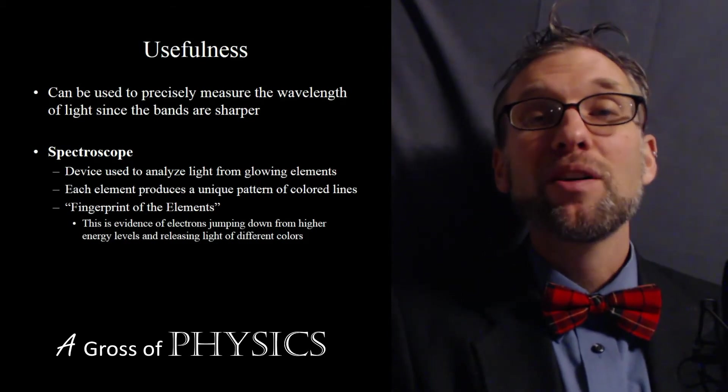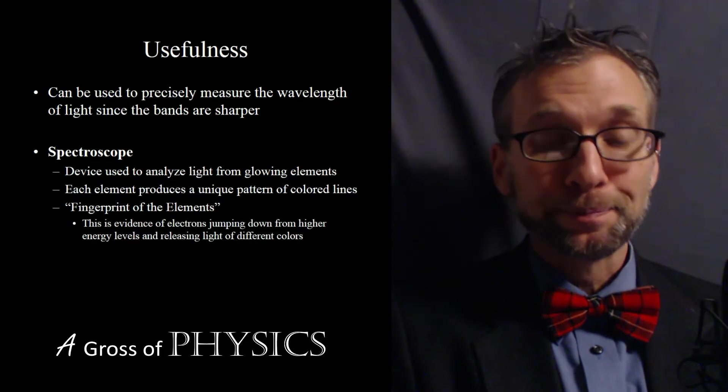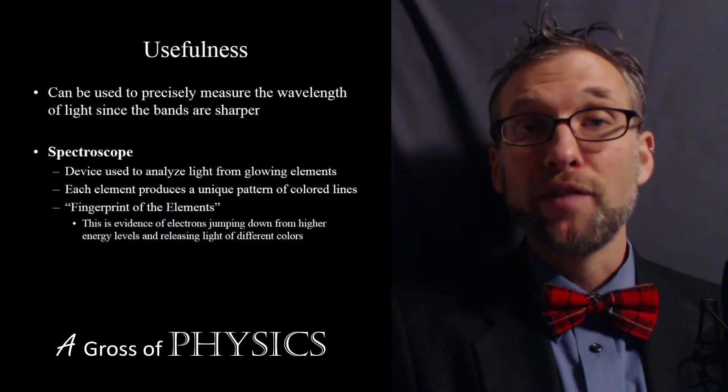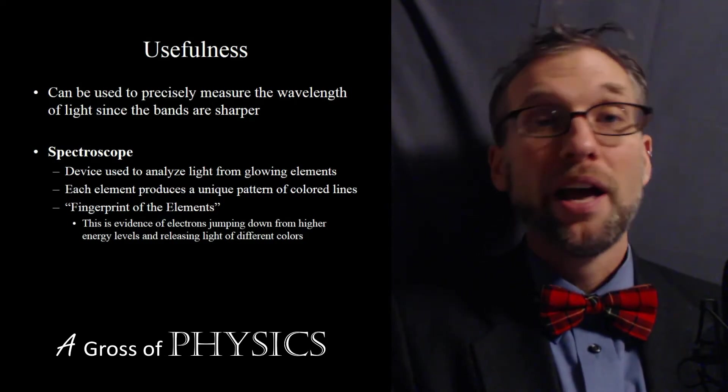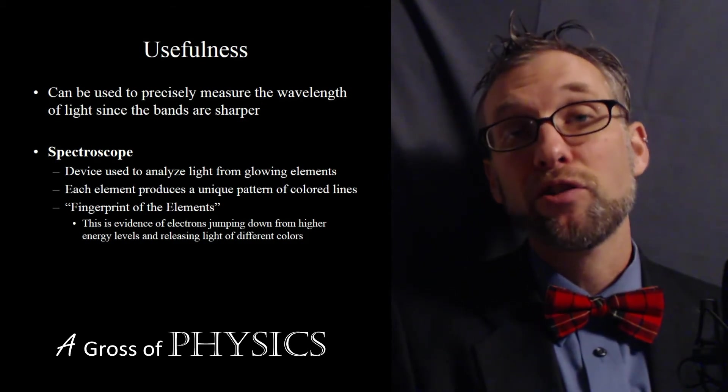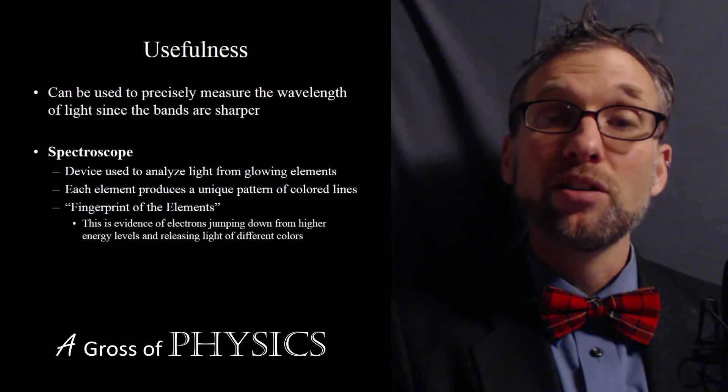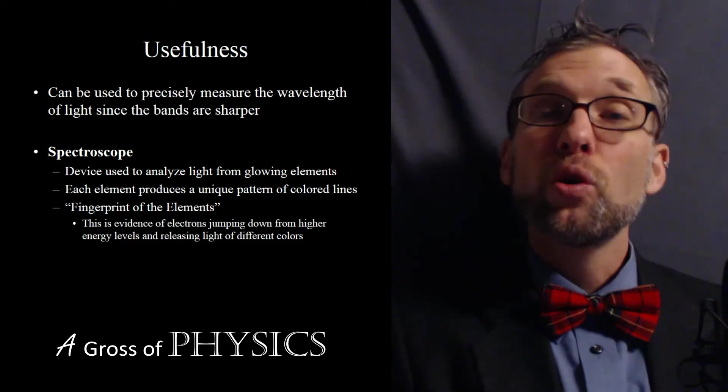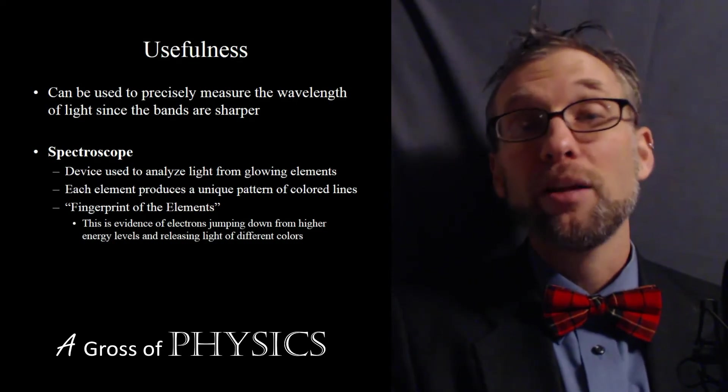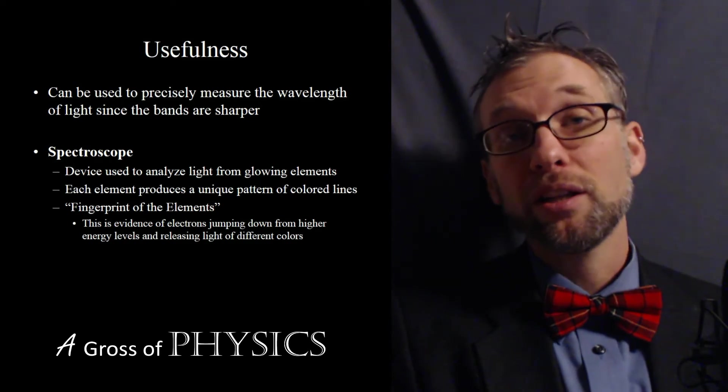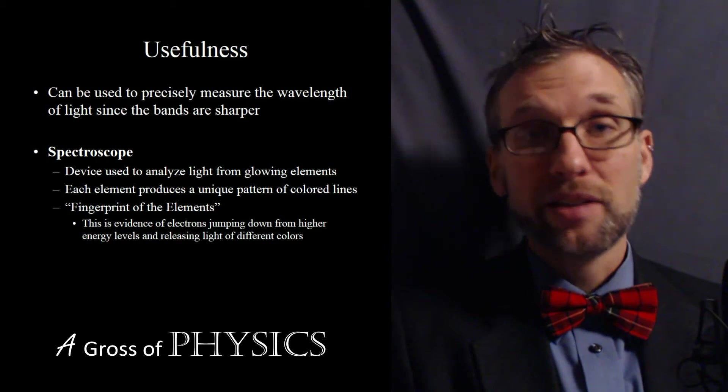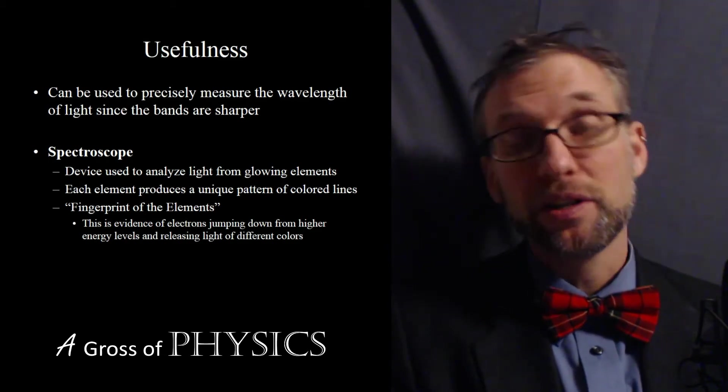When they do that, because every electron in the element has different jumps that it will make, it may not just jump from n equals 5 to n equals 1. It may jump from n equals 2 to n equals 1, n equals 5 to n equals 3, then n equals 2 then to 1. You'll see different patterns that are produced. Every element has its own unique set of jumps that it takes. So what we can do is take a diffraction grating and look at elements and determine what element it is. We could have an unknown element, look at the light being produced from that element and see whether it's hydrogen or helium or argon or different elements like that.